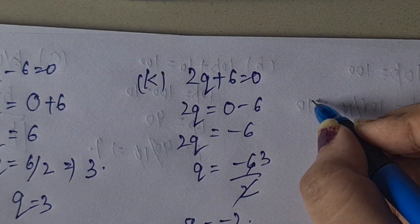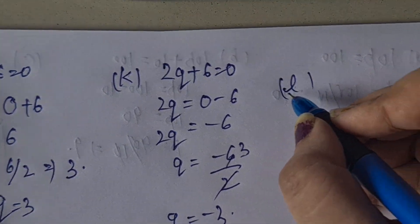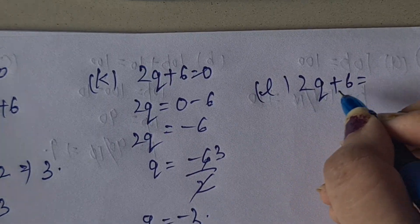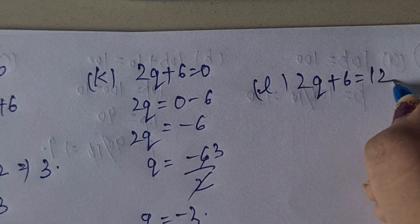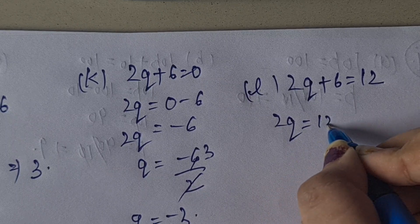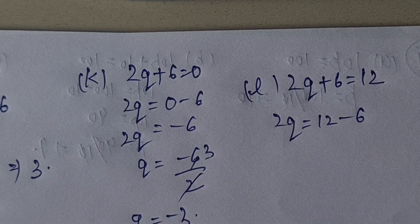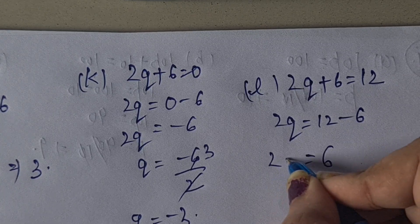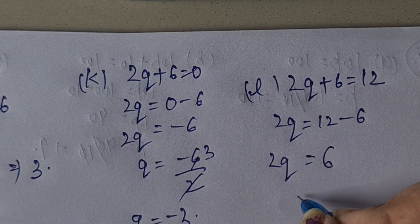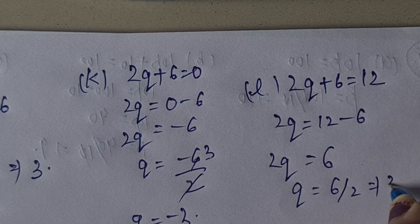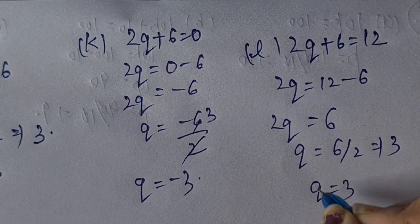Last part L: 2Q + 6 = 12. So 2Q = 12 minus 6 = 6, because plus becomes minus when moved to the other side. So Q = 6 by 2 = 3. The value of Q is 3.